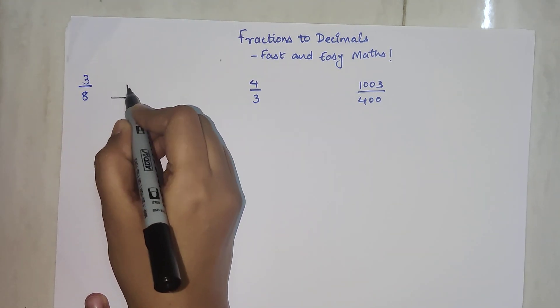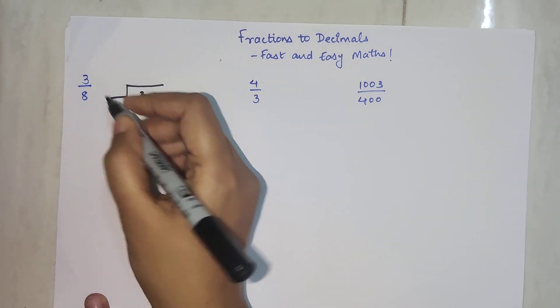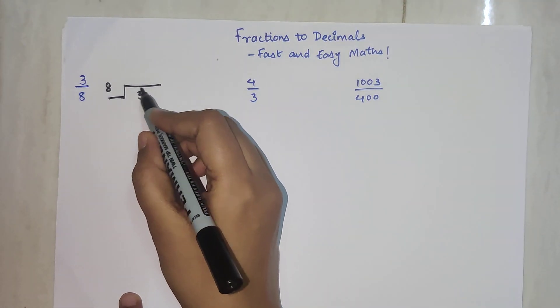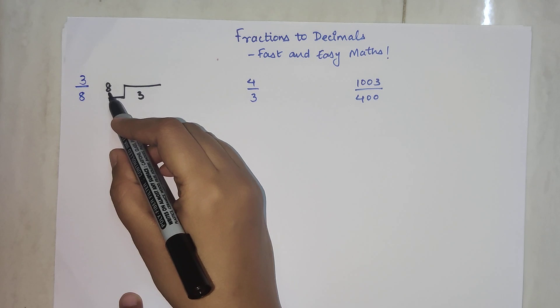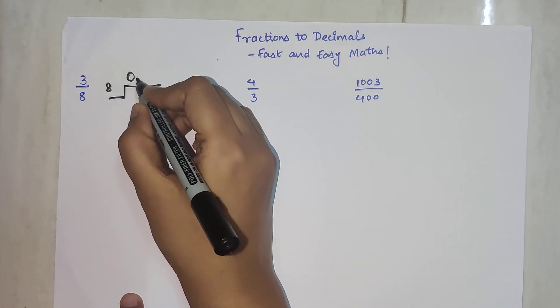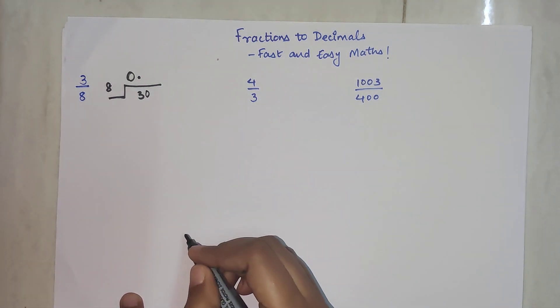Very basic: the numerator goes here and the denominator comes here. Please understand, if your numerator or the number here is smaller than the number given here, then you have the liberty of taking a decimal point and putting a 0 besides this number.